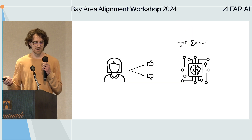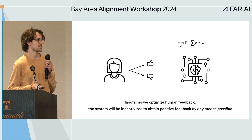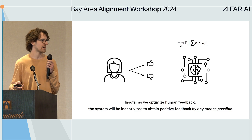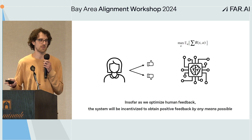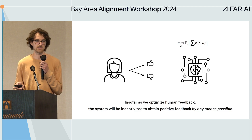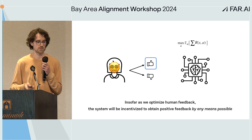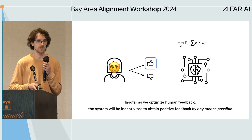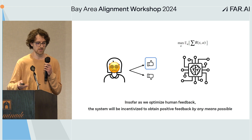So how did we get here? On a very high level, part of the problem is that insofar as we optimize human feedback, the system will be incentivized to obtain positive feedback by any means possible. So insofar as the user can be tricked, manipulated, or deceived to give positive feedback, the system will try to do that.